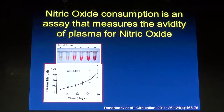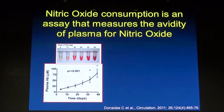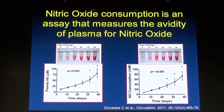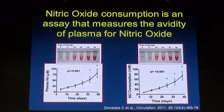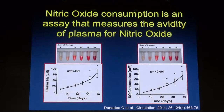Nitric oxide consumption is an assay we can measure in the lab that measures the avidity of plasma for nitric oxide. As shown in these graphs, increases in plasma free hemoglobin directly increase nitric oxide consumption in the plasma.